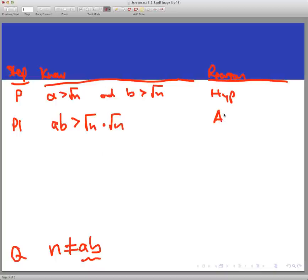Now, just take a look at what's on the right-hand side of that inequality. This is telling me that ab is bigger than this. This side right here is equal to, well, you take radical n times itself, that's just n, isn't it?